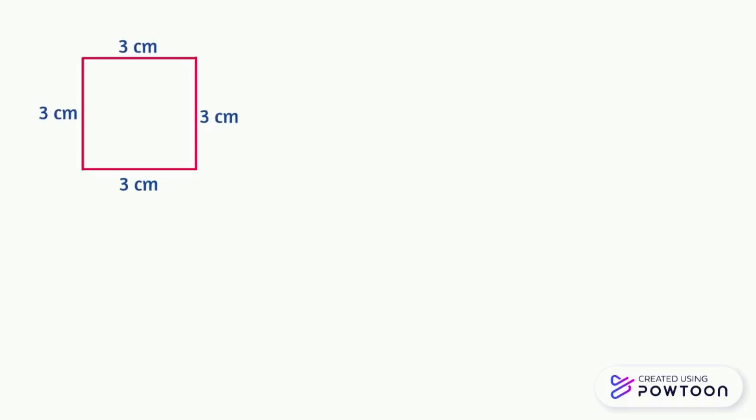If we have a square and we want to find its perimeter, we just add the length of all the sides. We have a square and each side measures 3 centimeters. Its perimeter is 3 plus 3 plus 3 plus 3 equals 12. Don't forget the unit, which is here the centimeter. So the perimeter of this square is 12 centimeters.